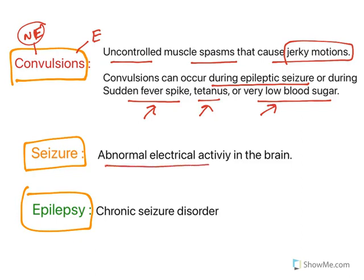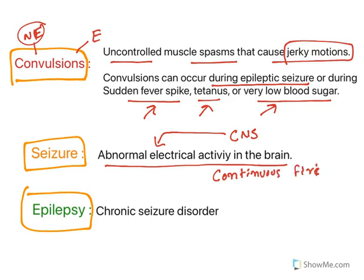A seizure is an abnormal activity in the brain. There is a problem in the central nervous system that results in abnormal electrical activity. In some textbooks it is also known as continuous firing of the brain — meaning continuous depolarization of the brain.